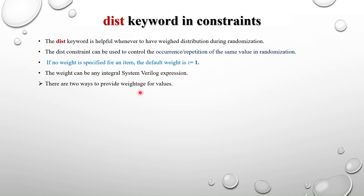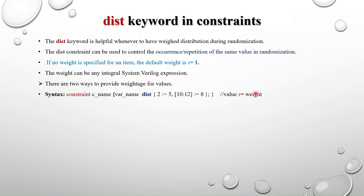There are two ways to provide weightage for values using two operators. The syntax is: constraint <name> { <variable> dist { <value> := or :/ <weight> }; }. The left side is the value or item, and the right side is the weight or weightage. The first operator is the colon-equal operator (:=) and the second is the colon-slash operator (:/).